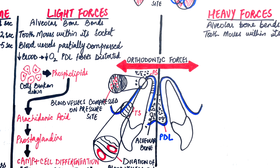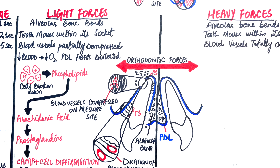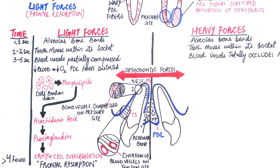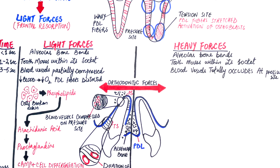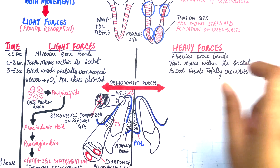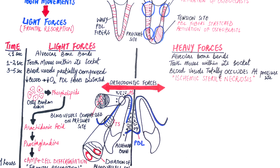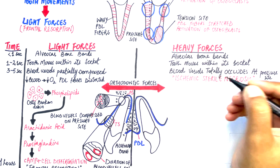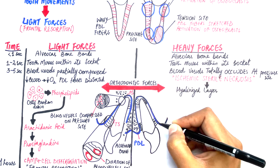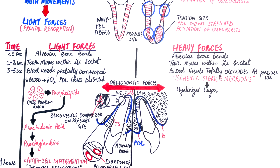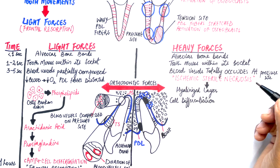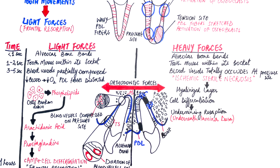On the other hand, if the forces applied are heavy in nature, the blood vessels, instead of partially compressing, will totally occlude on the compression site. When this happens, instead of cells being stimulated from the PDL space, the pressure site undergoes an ischemic and sterile necrosis — it is called sterile because there is no pathogen involved. The area of sterile necrosis has been termed the hyalinized layer. Osteoclasts from the nearby undamaged area adjacent to the hyalinized and necrotic zone will start resorption of the bone underneath the necrotic layer. This resorption is called undermining resorption, as the resorption occurs under the hyalinized layer or under the lamina dura.